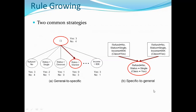Specific to general is a bottom-up approach: start with the most specific rule and move toward the more general one. For example: refund equals no AND status equals single AND income equals 85K, then keep moving to more generalized rules.